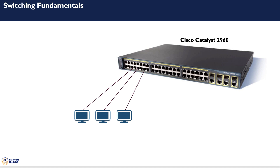Let's look at a switch. This is how a switch looks — for example, this is a Cisco Catalyst 2960. It comes with 48 ports, which are 48 1-gigabit ports, giving you quite a lot of speed. Then you have some 10-gigabit ports, typically used for uplinks where you connect to an upstream router or another switch.